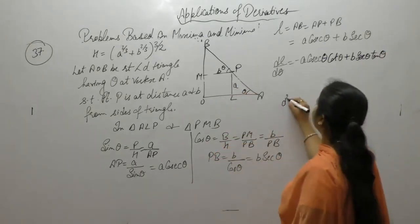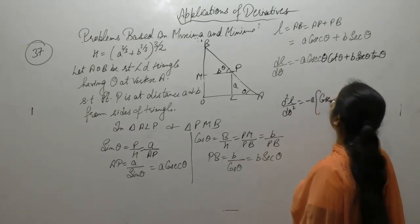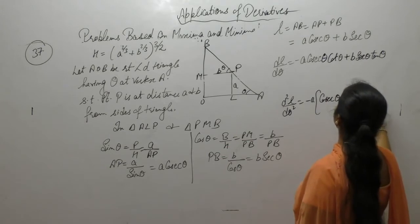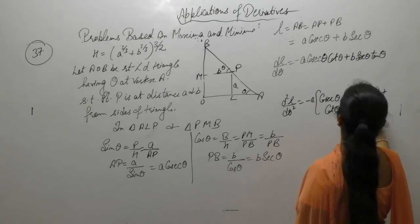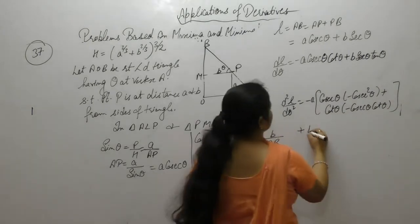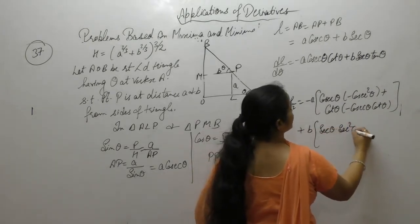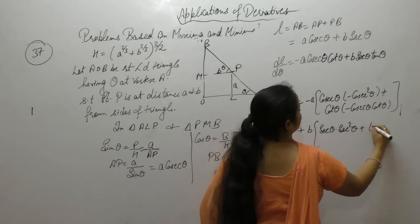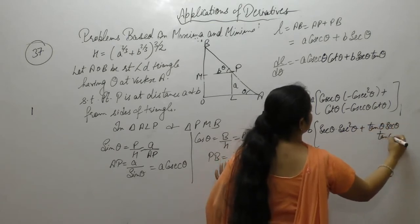Now take the second derivative. First, derivative of cot is minus cosec squared, plus cot as it is. Derivative of cosec is minus cosec theta cot theta plus B. For sec, derivative of tan is sec squared, and derivative of sec is sec theta tan theta.